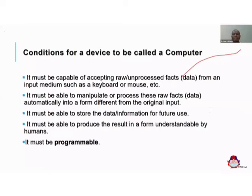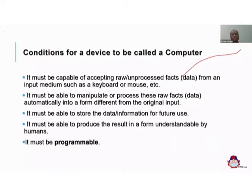The second condition is that the device must be able to manipulate or process these raw facts, which we call data, automatically into a form that is different from the original input. Every time you sit at your keyboard and type, you are entering information in a human-understandable form. But the computer will convert it into binary coded representation — that is, ones and zeros. So for any device to be called a computer, it should be able to manipulate your input and change that form by itself within its system — that's what we call processing.